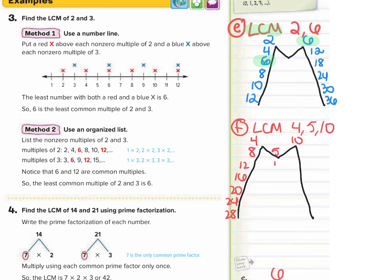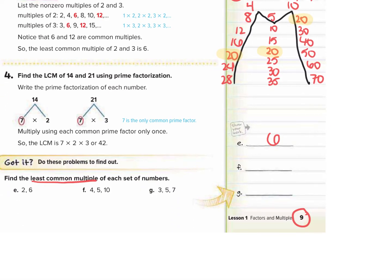Now let's do five: five, 10, 15, 20, 25, 30, 35. And 10 would be: 10, 20, 30, 40, 50, 60, 70. Now we want to stop and look for the least common multiple. The least common multiple between the three numbers is 20 — so the least common multiple between four, five, and 10 is 20. I'm going to write 20 on the line.